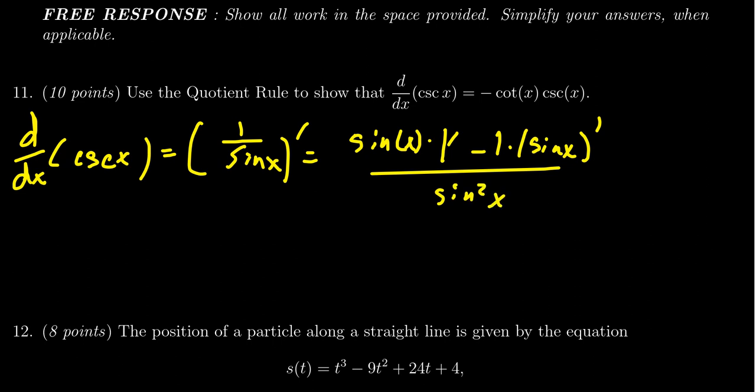The derivative of 1 is 0 because it's a constant, so this whole term is going to cancel out. The derivative of sine is going to equal cosine. So if we apply that right there, we're going to get 0 minus cosine of x. This sits above sine squared of x.